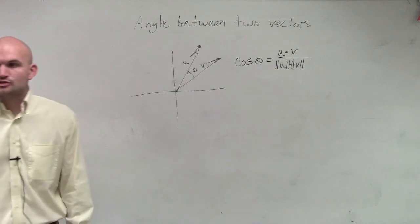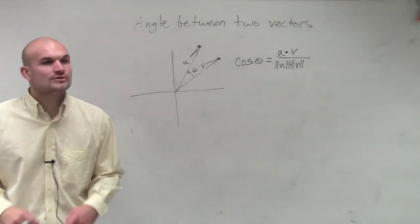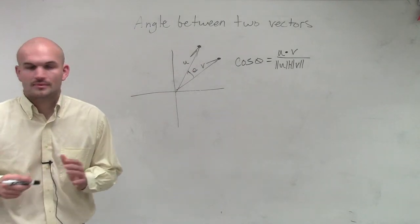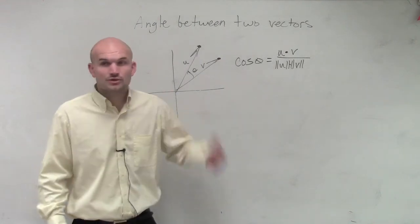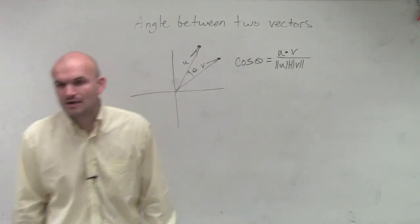So not the dot product, but that's going to be the multiplication of the magnitude of u times the magnitude of v. So let's just go through an example and see how that's going to work.